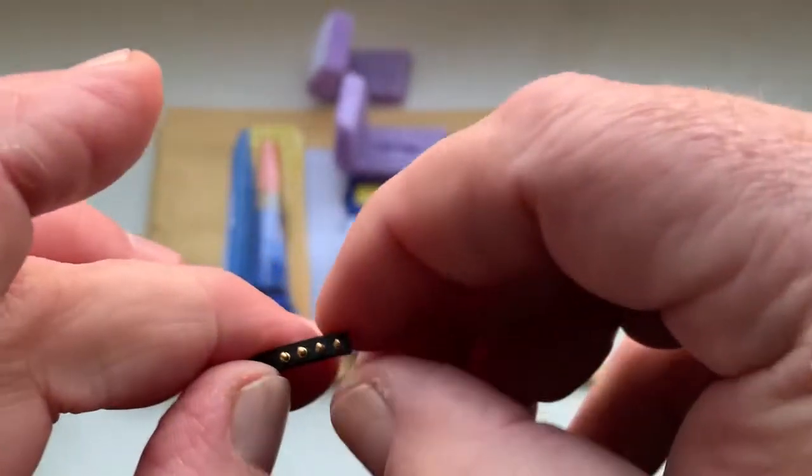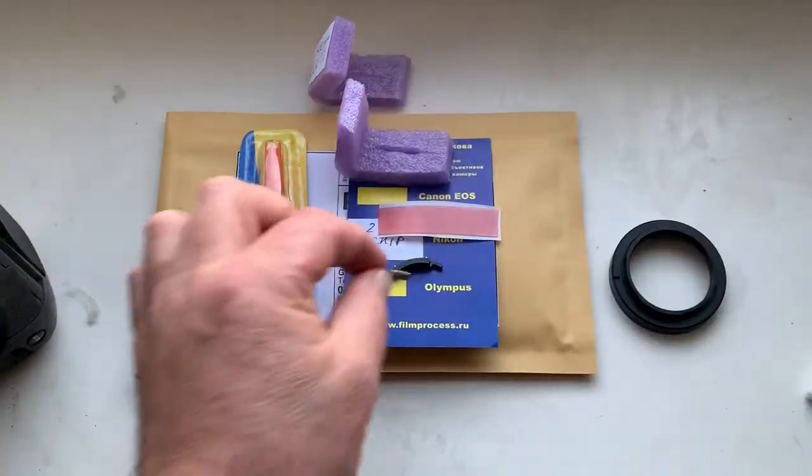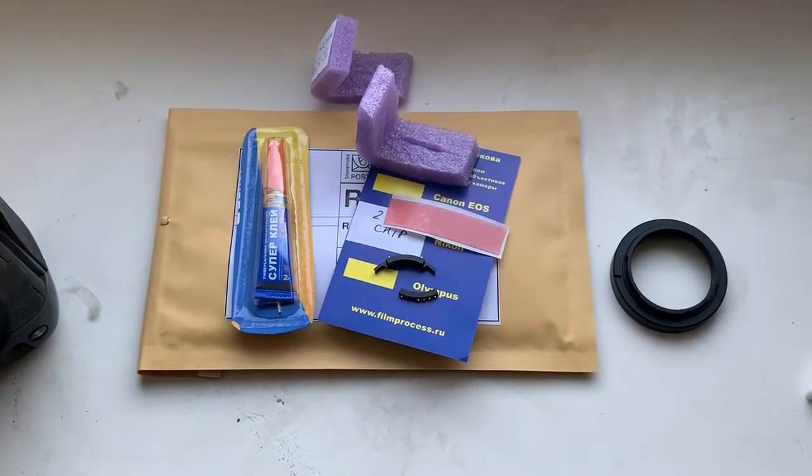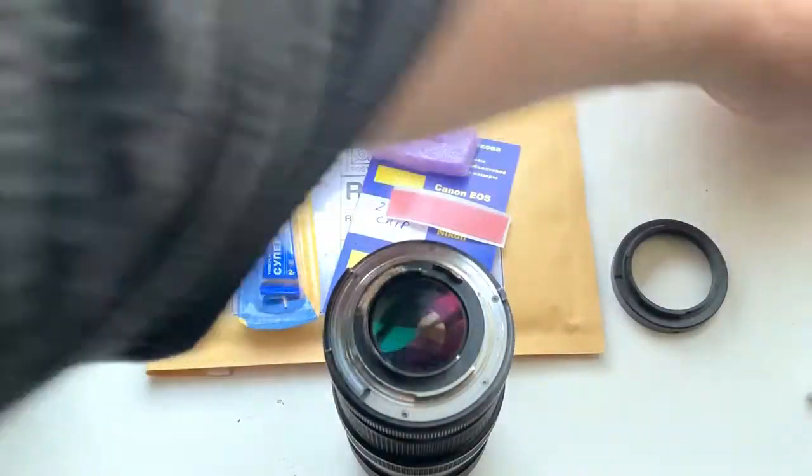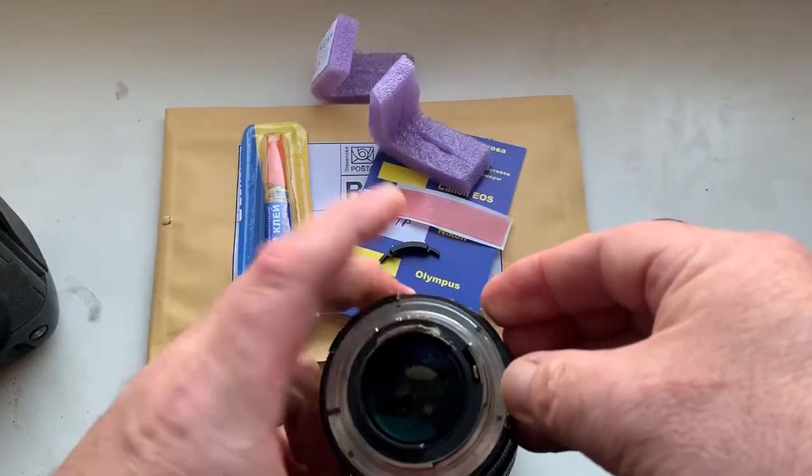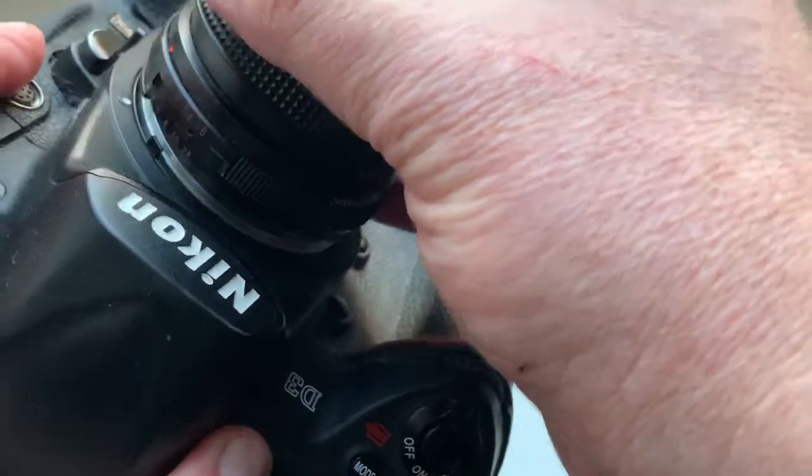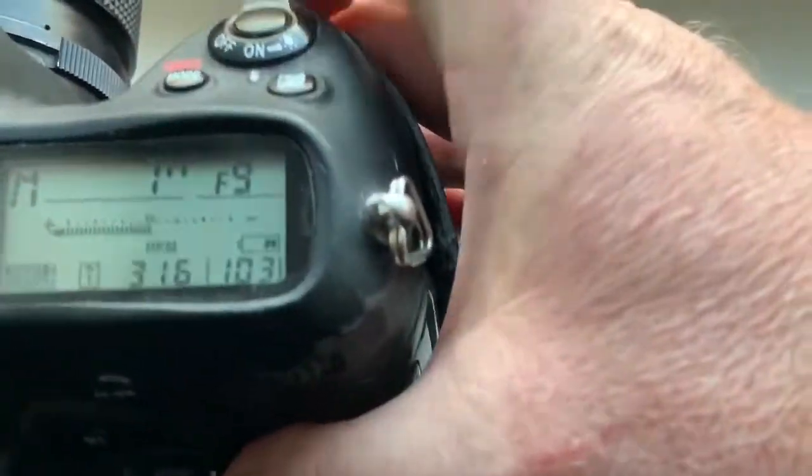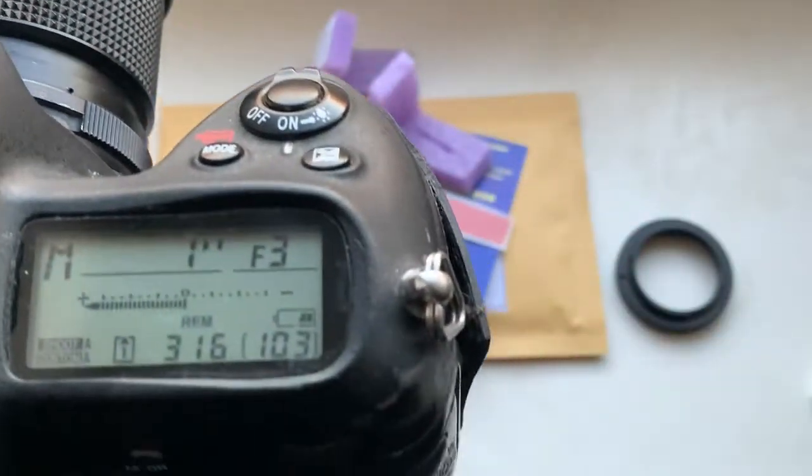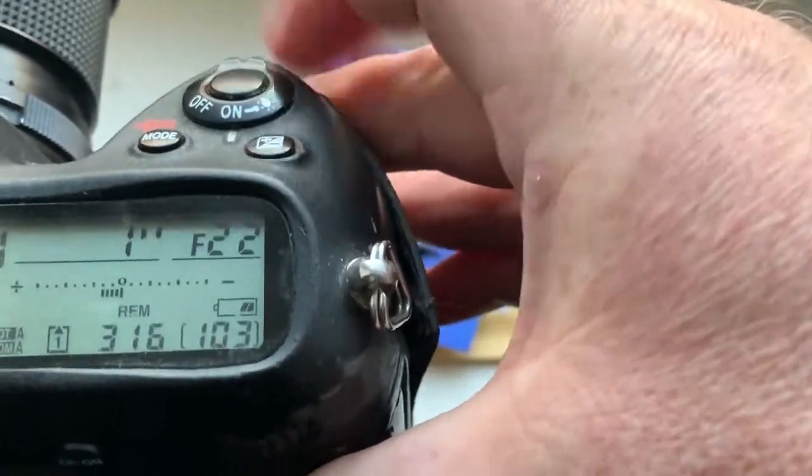And this is the chip for your lens. Now check your chip. I pre-programmed the focal length to 200 millimeters and the aperture range from 3 to 22.